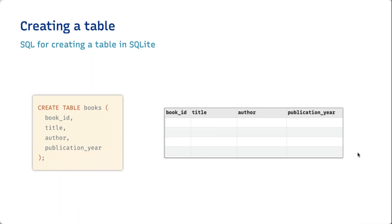Here is a simple SQL example written specifically for SQLite, since SQLite doesn't require data types to be declared. To create a small table with book_id, title, author, and publication_year, you write: CREATE TABLE books (book_id, title, author, publication_year); and when you execute this, the table is created. By contrast, in MySQL or other SQL databases, you must declare each column's data type, define primary keys, and specify uniqueness constraints — a steeper learning curve. SQLite makes this much simpler.